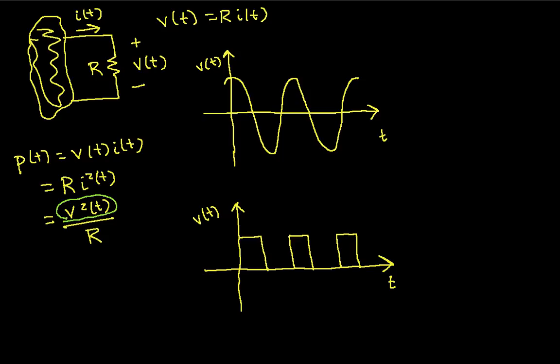The instantaneous power is proportional to the voltage squared or the current squared. If we look at the voltage squared term and see what it looks like on our graphs — if we take the voltage that looks like a sinusoid and square it — we get something that is also a sinusoid but with twice the frequency of the original. So the instantaneous power, for a sinusoidal voltage, is proportional to V squared of T, which has twice the frequency of the original.